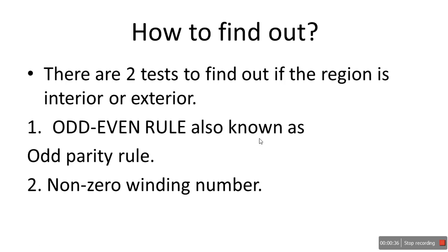So how do we find out? There are two tests to find out whether a region is interior or exterior. The first one is called the odd-even rule, also known as the odd-parity rule. The second one is called non-zero winding number. So first, we will learn the odd-even rule.